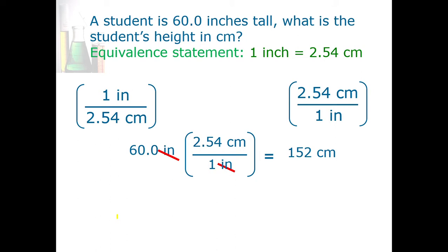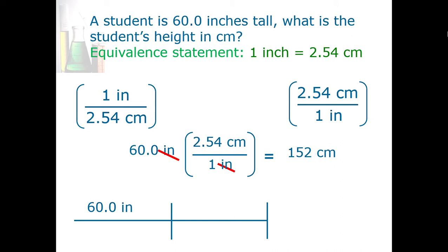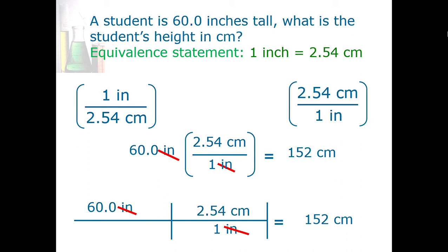Another way of displaying this is by using a grid. I put a little grid and I put my starting amount at the top of the first set of the grid, then I put my conversion factor in the next one. Once more, the inch units are going to cancel out and I get 152 centimeters. You can use either one — the factors in parentheses or the grid method. It depends on whether you're writing by hand or using a word processor, but either one is fine.